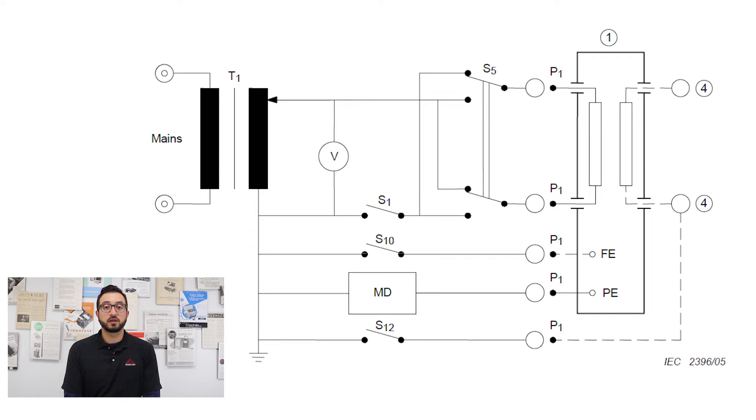On the circuit diagram you see something labeled MD, which is the measuring device circuit simulating the human body impedance. It's placed between the protectively earthed parts of our device under test and on the other side is the low or the neutral side of the power supply.